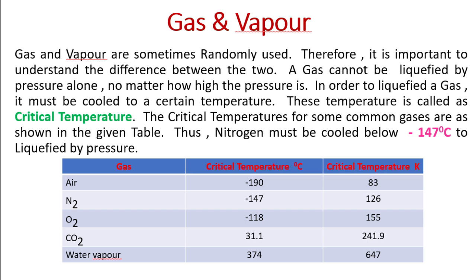Oxygen (O₂) has a critical temperature of minus 118 degrees Celsius, or 155 Kelvin. Carbon dioxide (CO₂) has a critical temperature of 31.1 degrees centigrade, or 241.9 Kelvin. Water vapor has a critical temperature of 374 degrees centigrade, or 647 Kelvin.